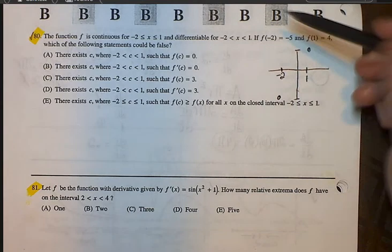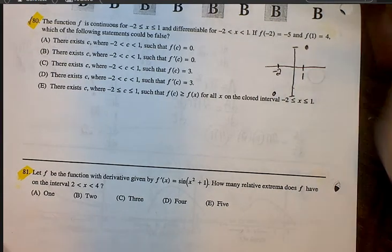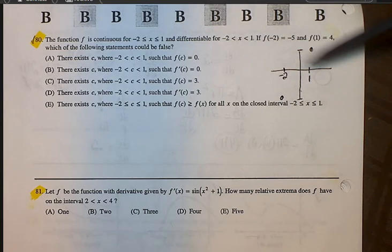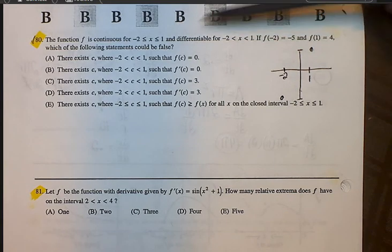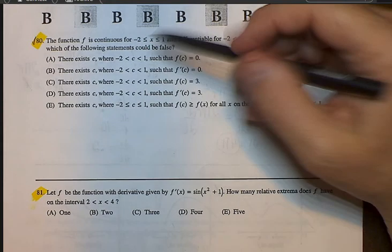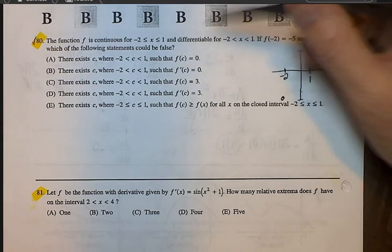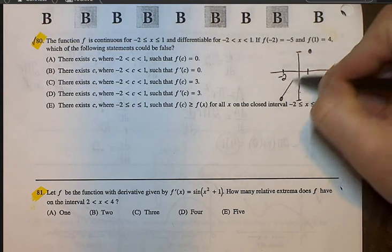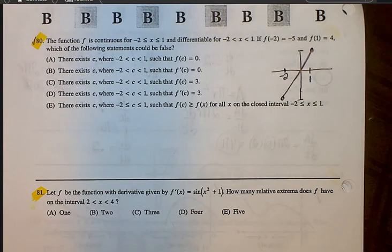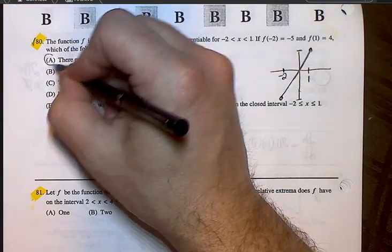Alright, if f is continuous, which means I'm going to be able to make this curve without really picking up my pen, and there's nothing crazy happening between these two points, and we know that these two facts are true, which statement must also, which statement, which of the following statements could be false. So I know when I connect these, I'm going to get a zero that's definitely here. So I know that A is going to be true.